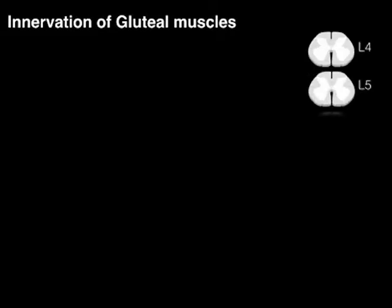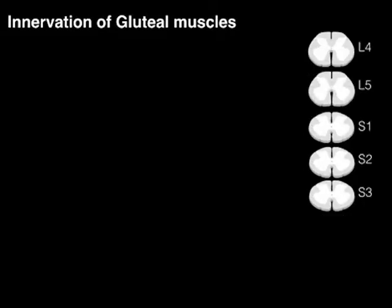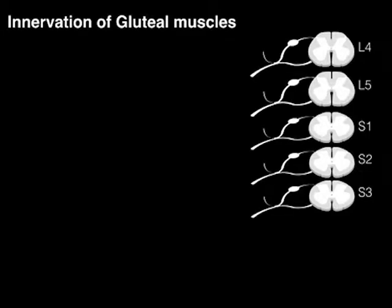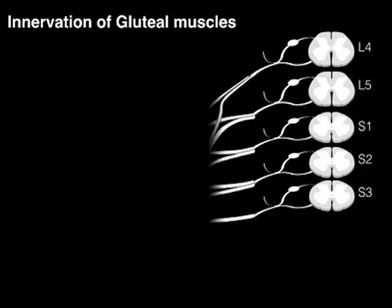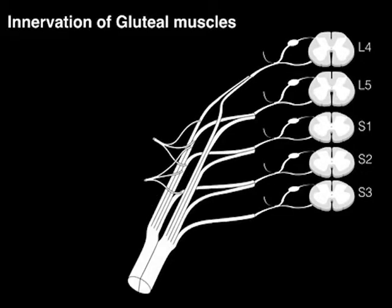The innervation of the gluteal muscles arises from the sacral plexus — L4 to S3 spinal cord levels — through the ventral rami, or spinal nerves, which feed into the sacral plexus.